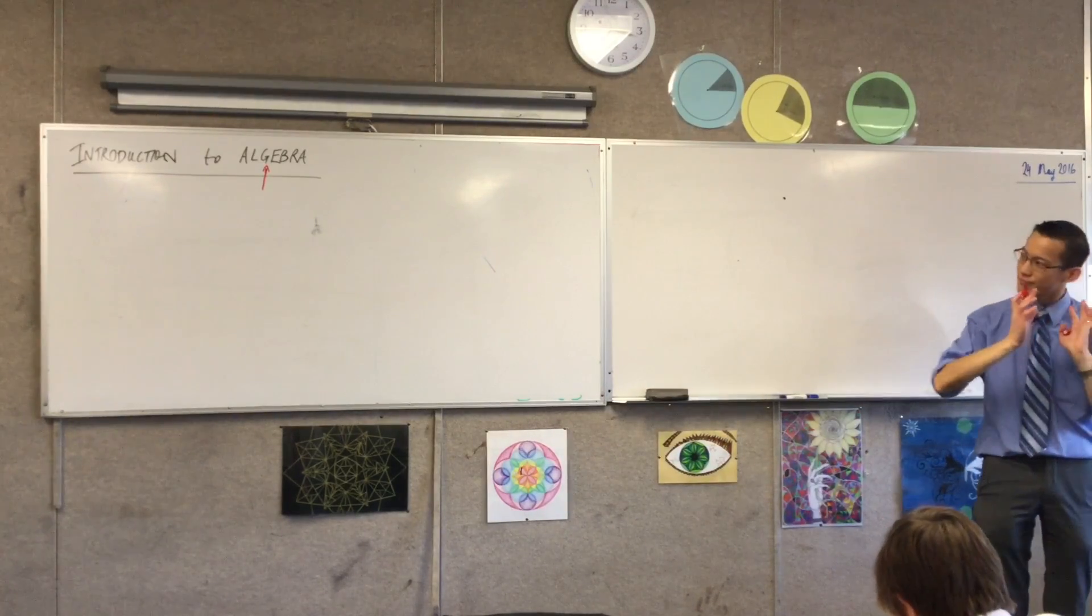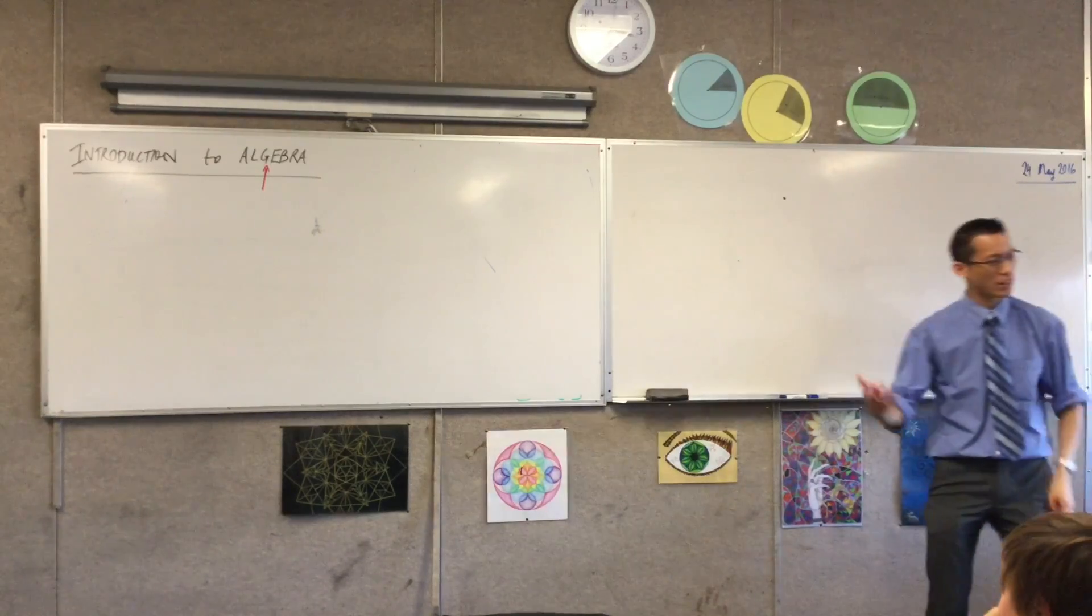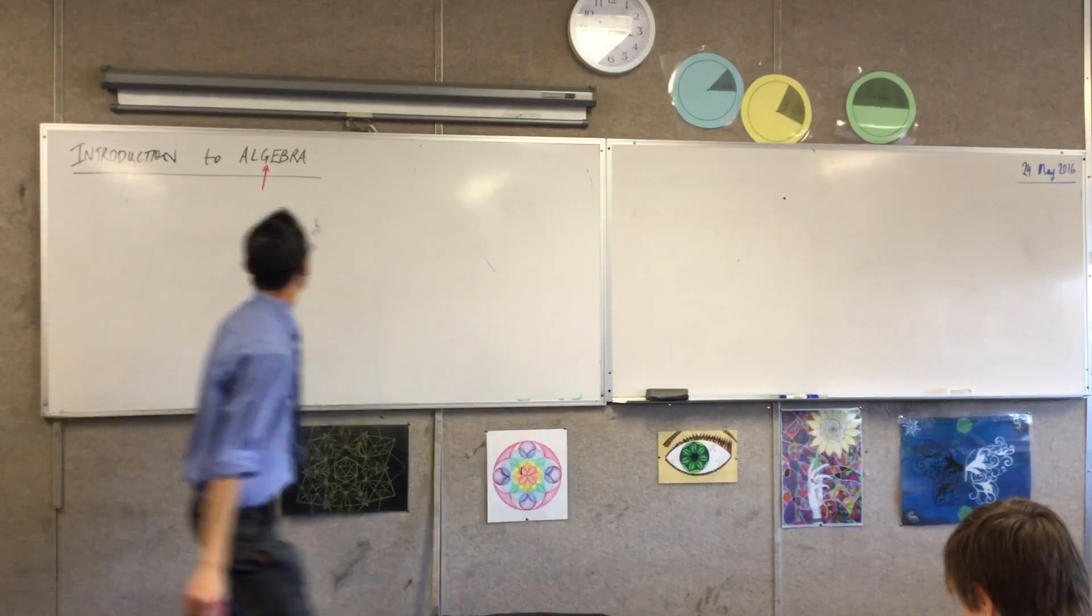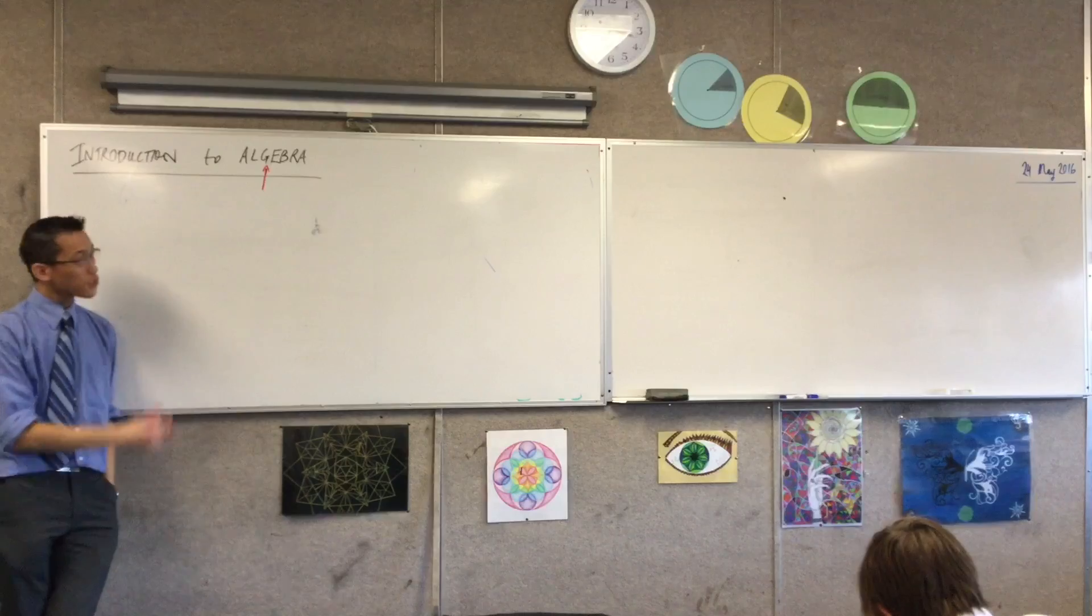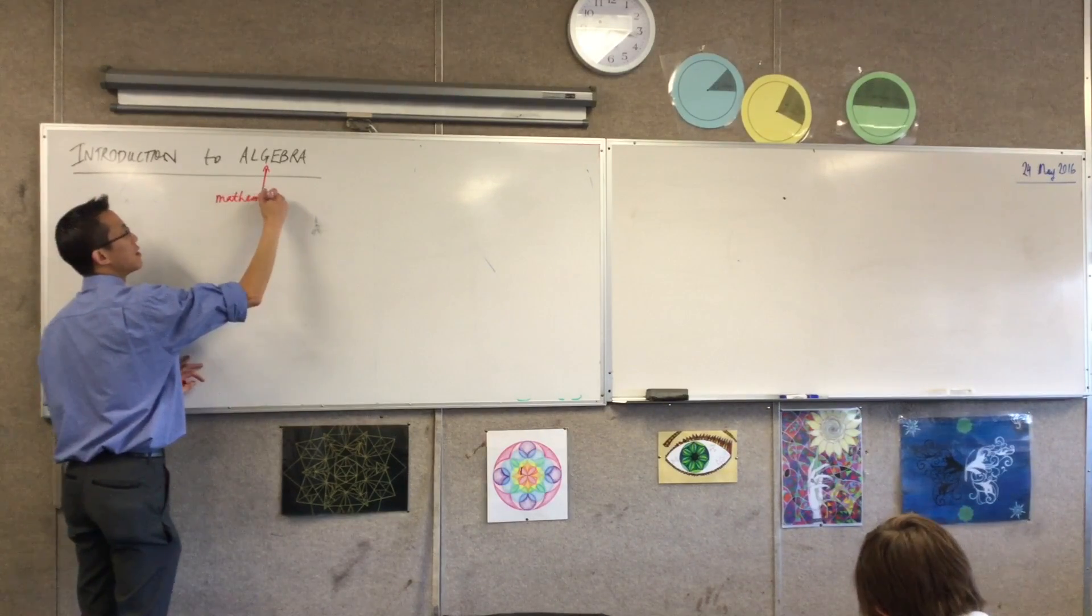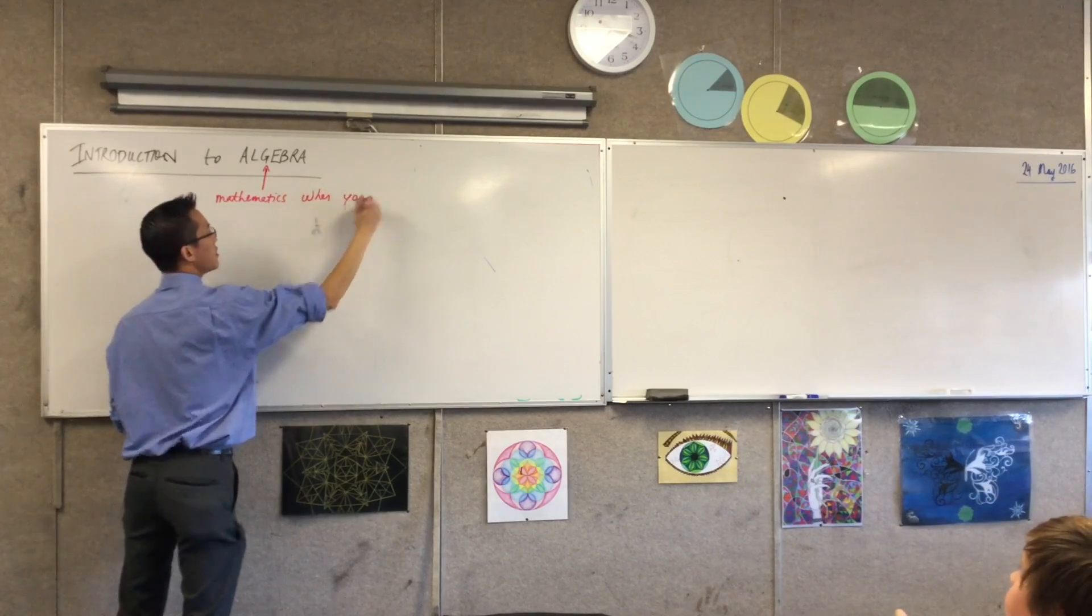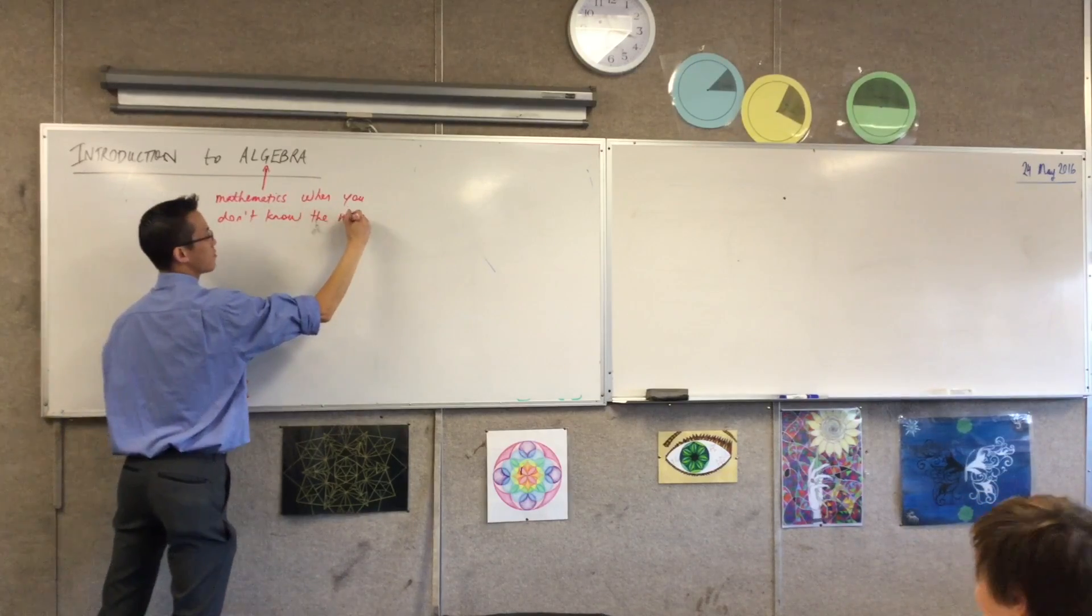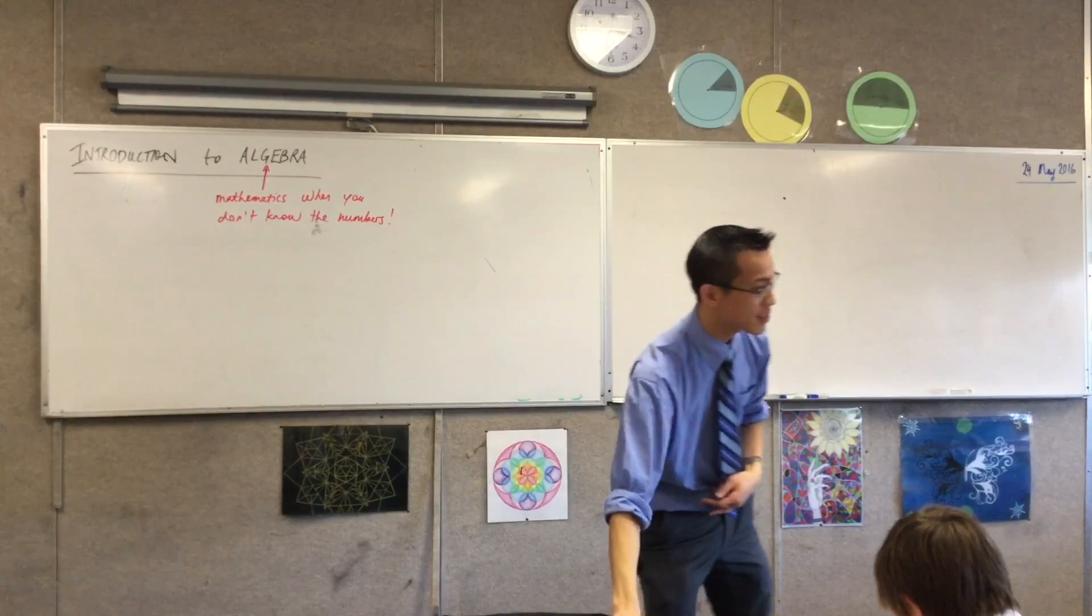I'm going to give you what my definition of algebra is because it kind of has a bit of a reputation and the name itself, it actually comes from Arabic, so it's just a transliteration into our language. I'll tell you about the backstory a little bit later. But algebra is all about mathematics when you don't know the numbers. Now, write that down with me and then I will try and explain what I mean.